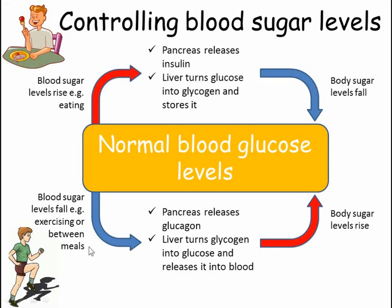If blood glucose levels fall too low, for example during exercise or in between meals, the pancreas releases a different hormone called glucagon. This causes the liver to turn the glycogen that has been stored back into glucose and release it into the bloodstream.